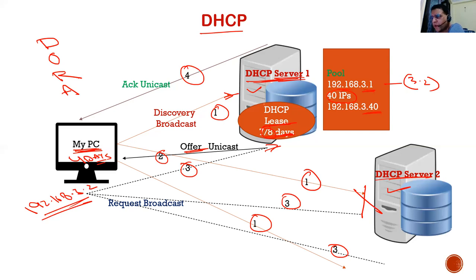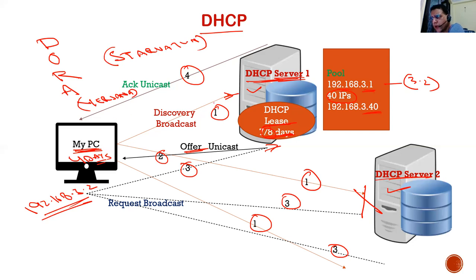A lot of attacks are possible here. One is a DHCP Starvation Attack. In this attack, I can generate fake requests using tools — knowing that the pool has 40 IPs, I can generate 40 fake requests and exhaust the entire pool. This is known as a DHCP Starvation Attack.